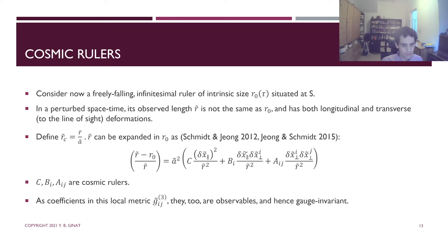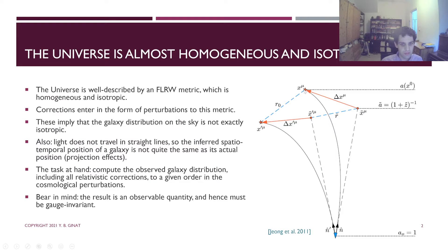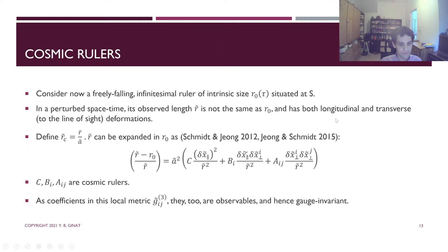For the cosmic rulers, we can go back to the original figure. Here you can see a ruler whose intrinsic size is R0, but the observed size R tilde is different from R0 in general, and this difference is caused by projection effects. If the ruler is infinitesimal and situated at S, then the difference between the observed size and the intrinsic size of the ruler is parametrized by this matrix, which comprises both transverse and longitudinal deformations. The coefficients C, B_I, and A_{IJ} are called cosmic rulers. They are gauge-invariant observable quantities, and the matrix G_{IJ} tilde 3 formed by these coefficients is called the local metric.